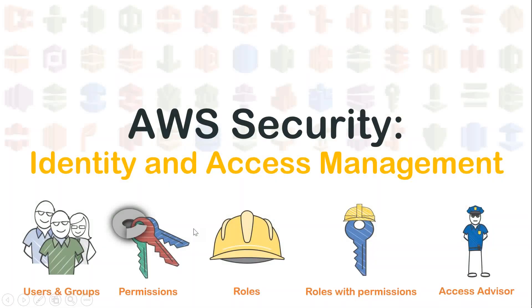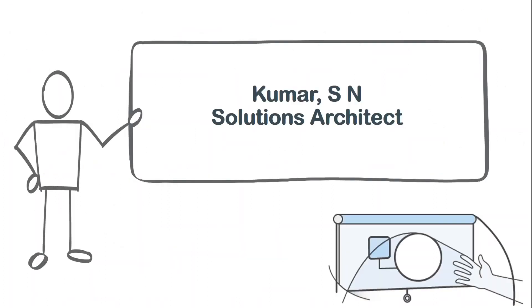We are going to see Identity and Access Management, one of the security measures provided by Amazon. It's quite familiar to a lot of people, but let us see how we can get it implemented in AWS.